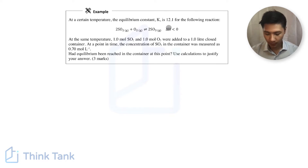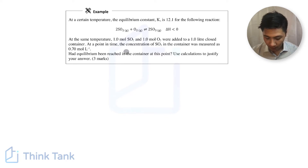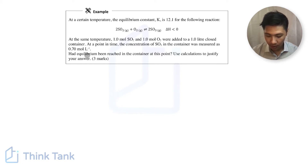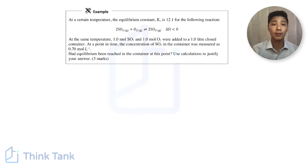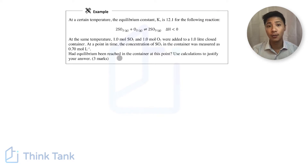The question says: at a certain temperature the equilibrium constant K is 12.1, for the reaction where sulfur dioxide reacts with oxygen to give sulfur trioxide. At the same temperature, you have one mole of sulfur dioxide and one mole of oxygen added to a one-liter container. At a point in time, the sulfur trioxide in that container was measured to be 0.7 mol/L. Determine whether the system has reached equilibrium or not.